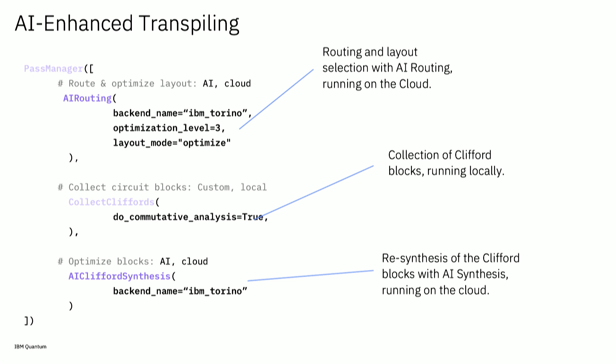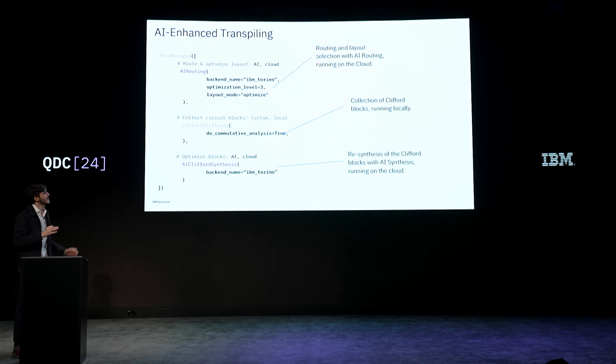You take a circuit and start by routing the circuit. This routing actually does layout as well. It will take your circuit, apply the AI model to insert swaps and choose the qubits you want to use. Then we collect specific blocks from the circuit that we will later resynthesize with the AI algorithm. Finally, we do this synthesis. In this case, we are doing Clifford blocks. By the way, some of these passes run on the cloud. So you can have a pipeline which mixes some remote passes, like the routing, with some local passes, like the collection of Clifford blocks, and again, some remote pass here.